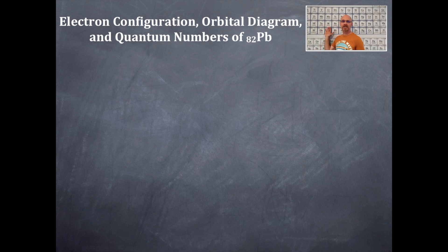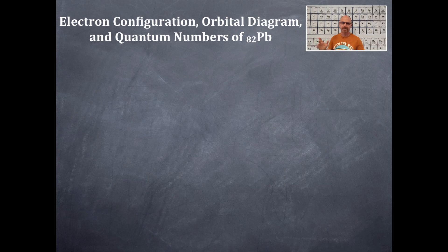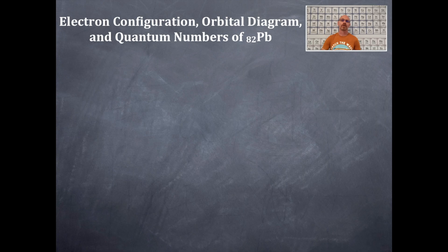So you're going to pull out your periodic table and find Lead — where is it? It's over there somewhere; it's kind of off the chart here for me, literally speaking. So it's Lead-82, and you're going to write out the electron configuration for Lead, and then you're also going to write an orbital box diagram for Lead. You're going to use the noble gas notation. Pause, start it up again, give it a try yourself.